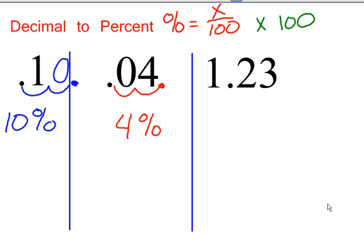1 and 23 hundredths, move the decimal over two places, one, two. You have 123 percent.